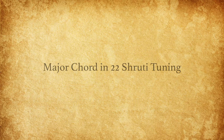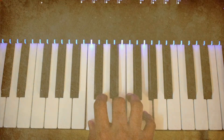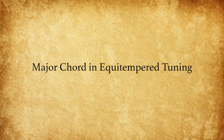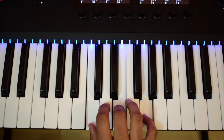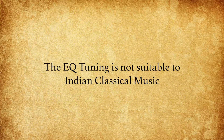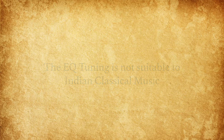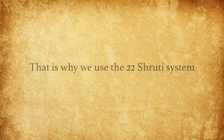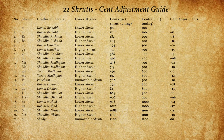The major chord became imperfect — what should have sounded one way sounded different. All pianos in the world today are tuned to the equal-tempered scale. The EQ tuning, therefore, is not suitable to Indian classical music. That is why the 22 Shruti tuning system is the base for Indian classical music.